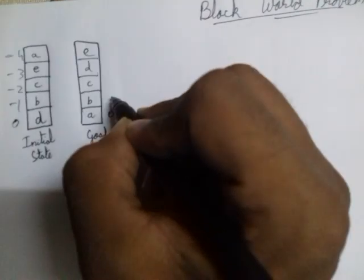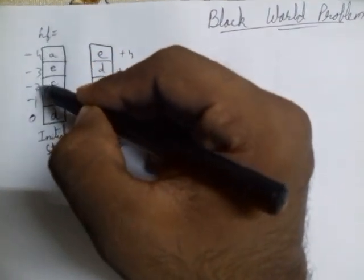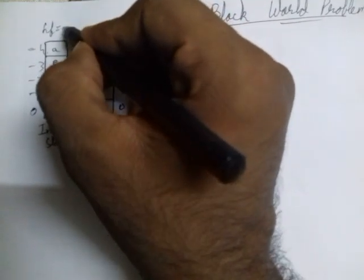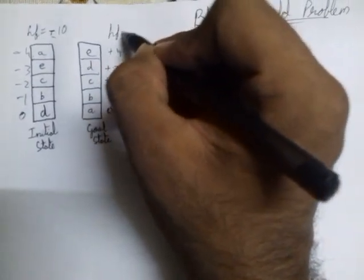The initial state is provided with numbers: 0, -1, -2, -3, and -4. The goal state has values 0, +1, +2, +3, and +4. The heuristic function (hf) for the initial state is -4, -3, giving a total of -7 and -10, while hf for the goal state is positive 10.